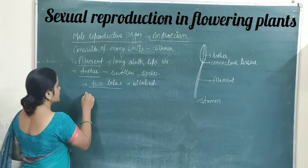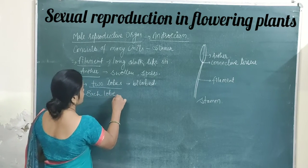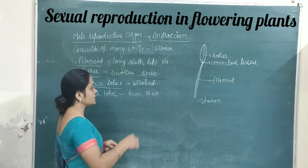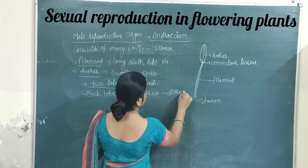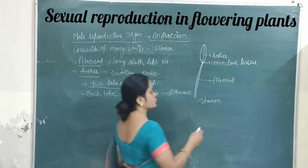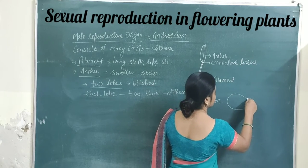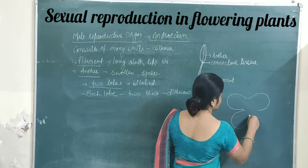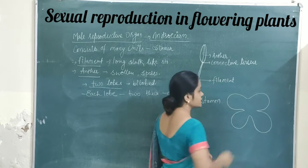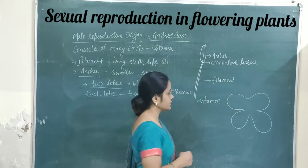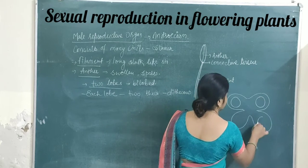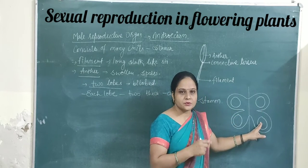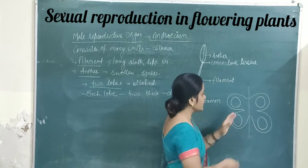Each lobe consists of two thecae. So in total, two thecae are present per lobe, and these contain the pollen sacs. If we draw the overall diagram to show the stamen, we can see the TS section of the anther lobe, and here four sporangia are present. Splitting the anther shows two pollen sacs on each side — one lobe on each side — giving two lobes total, which is the bilobed condition.